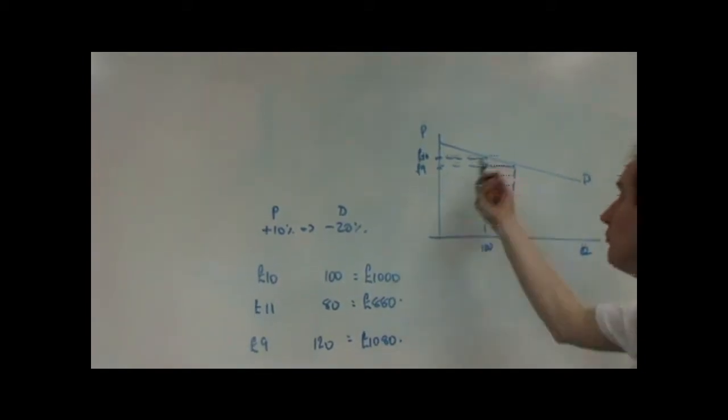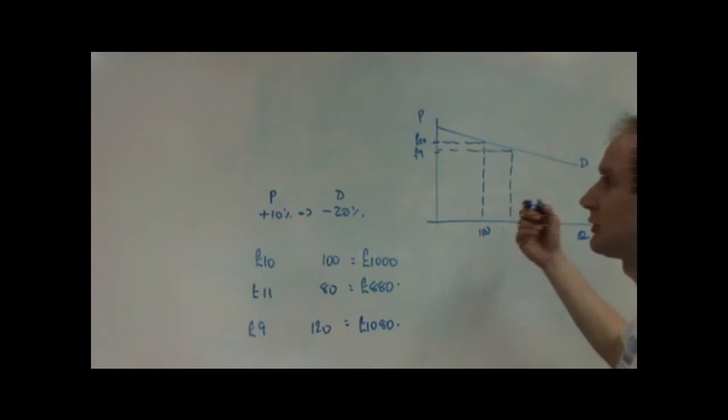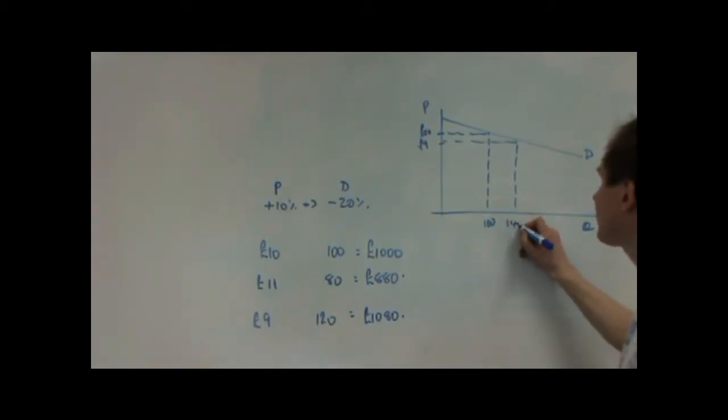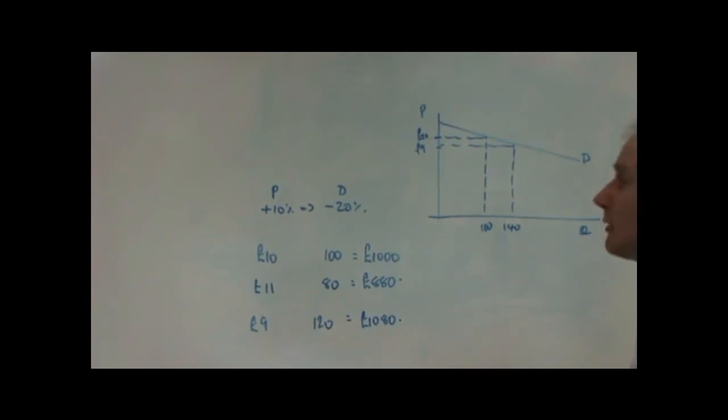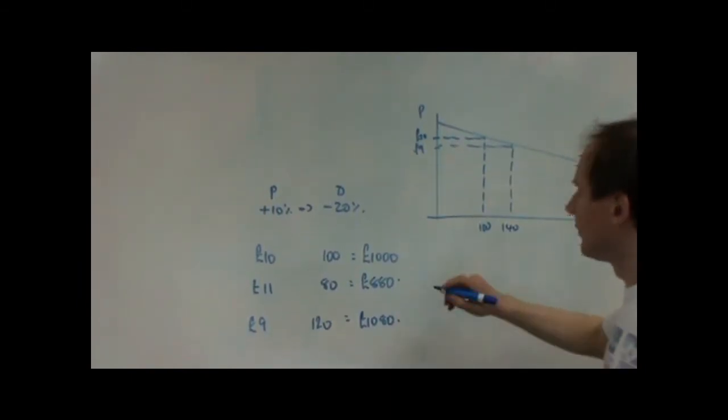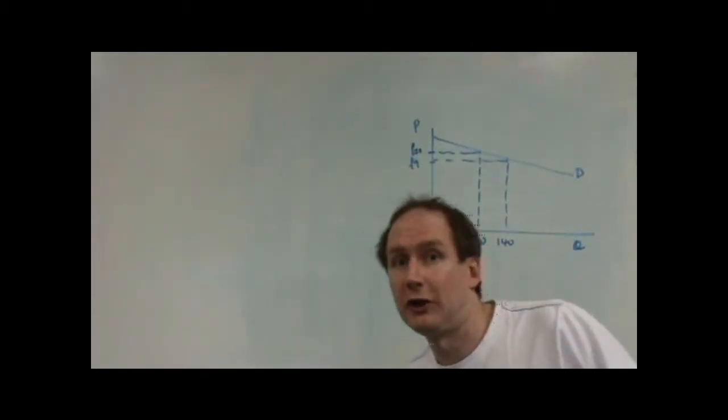Of course, it's gone up where in my case, probably more than 20%. It looks like it's gone up to 140, which would mean that price elasticity of demand was minus 4, in fact. But what you can see is that, if we look at what we've got off the diagram, what we've got is originally price is £10 times 100 is £1,000.